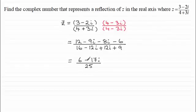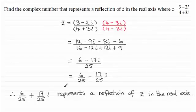And we can separate this into two parts, two terms. And you'll have 6 25ths minus 17 25ths i. And then from there, we just take the complex conjugate of this complex number, which is going to be 6 25ths plus 17 25ths i. And that represents then a reflection of z in the real axis.